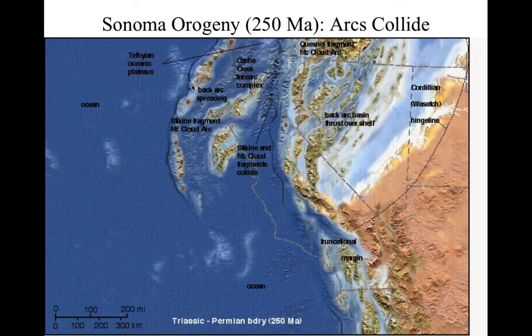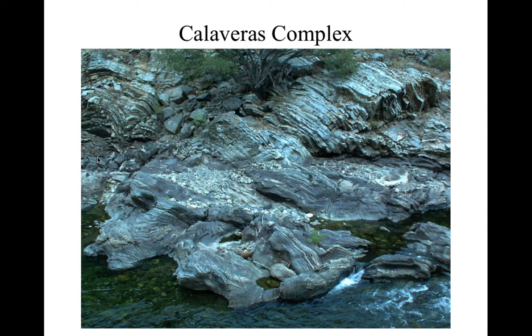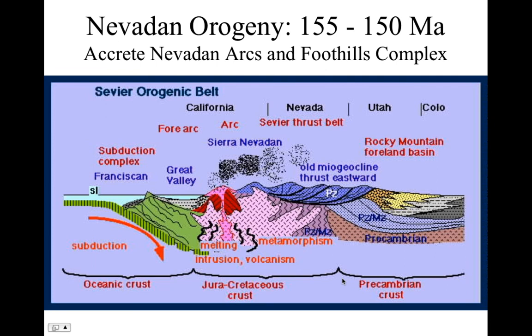Then as time goes on, we see the foothill subduction going right through here — the Maloney's fault zone. And here's some of the chert and sedimentary rocks of that Calaveras complex. This is the Merced River right before you go into Yosemite National Park. And then the Nevadan orogeny, about 150 to 155 million years ago, where we accrete the Nevadan arcs, the foothills terrain, and the Smartville block.